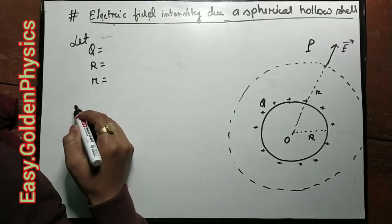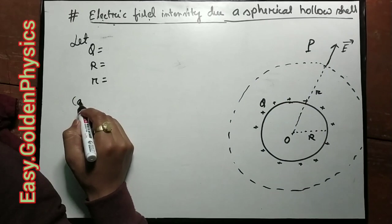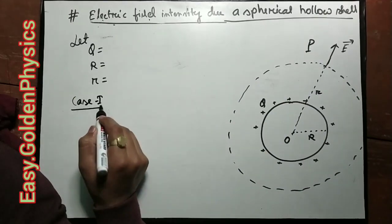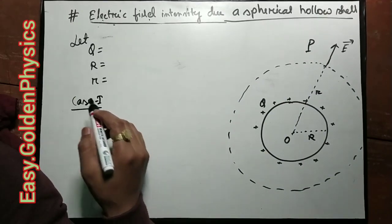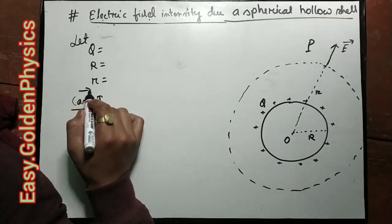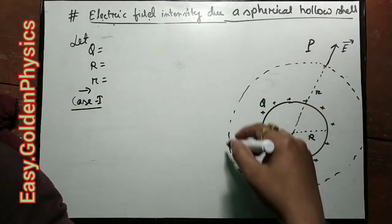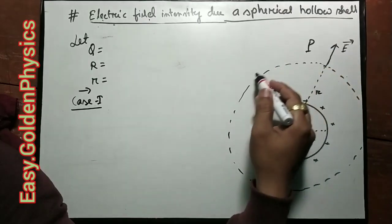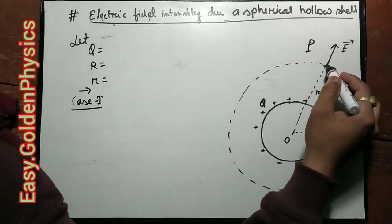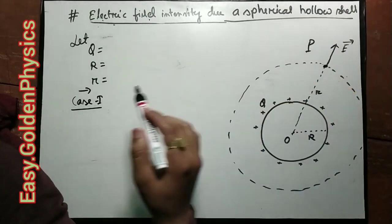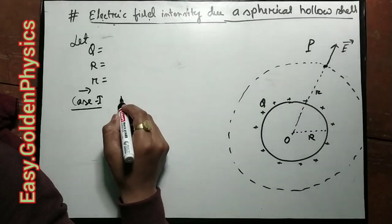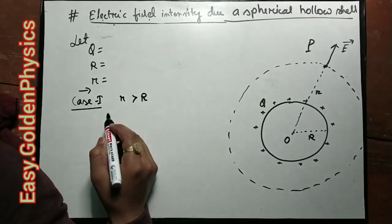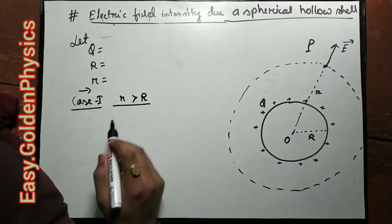Now we are going to discuss Case 1. A spherical Gaussian surface is drawn passing through point P. Case 1 is when small r is greater than capital R — the point is outside the spherical shell.